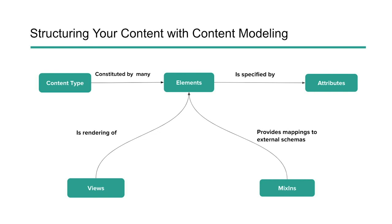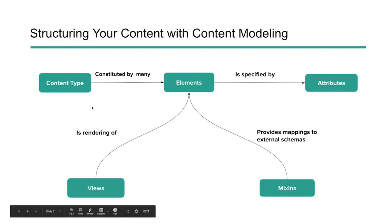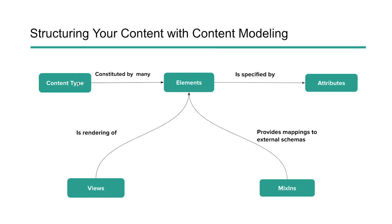So what does this look like in a practical sense? You've got content types — this could be like a blog article, a podcast page, or just a website page. And within that piece of content, you've got a number of elements: things like the title of the content, featured images, and the body of the content.